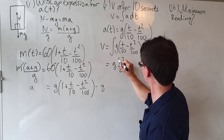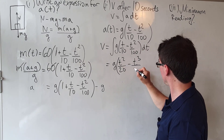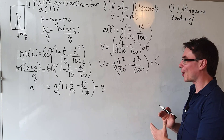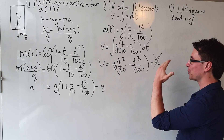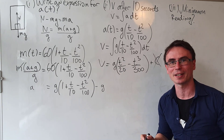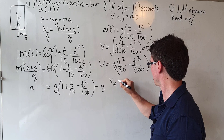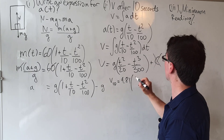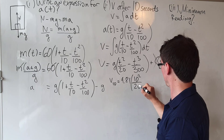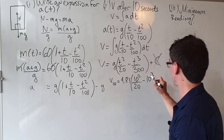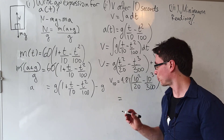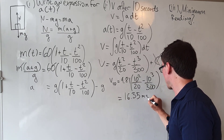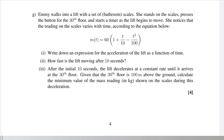This is a straightforward integral, giving t²/20 minus t³/300, plus a constant. The constant equals zero because at t equals zero the lift is not moving. After 10 seconds, v₁₀ equals 9.81 times (10²/20 − 10³/300), giving a speed of 16.35 meters per second.